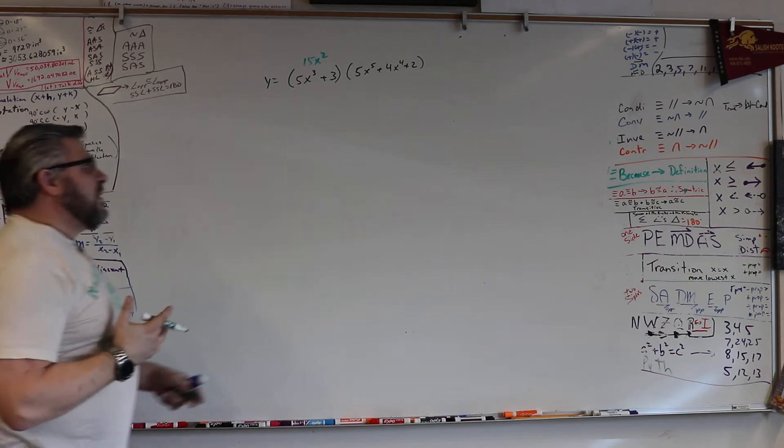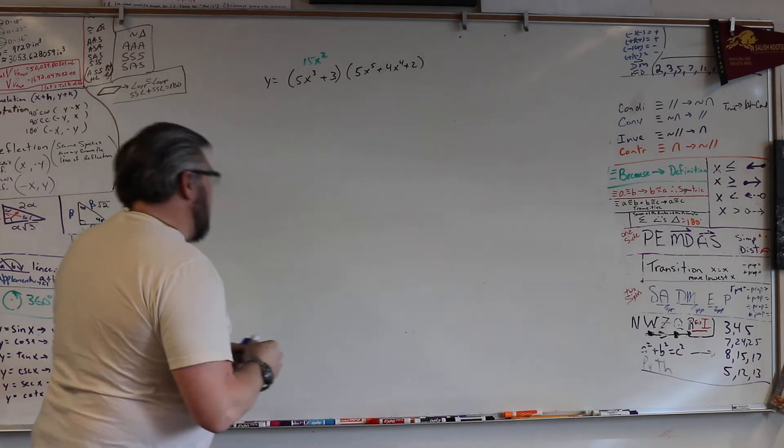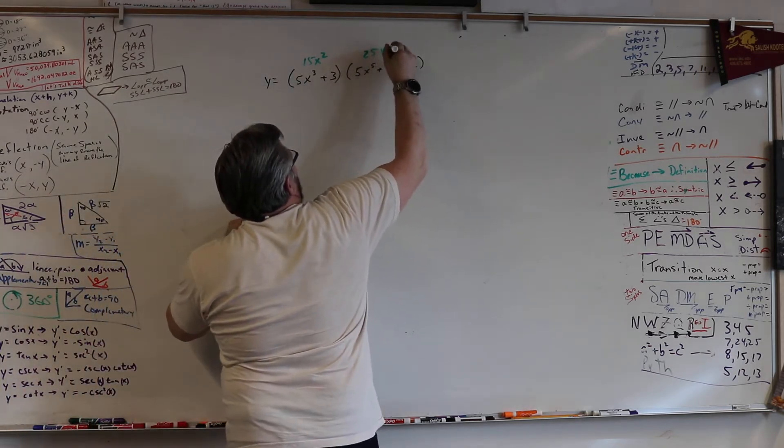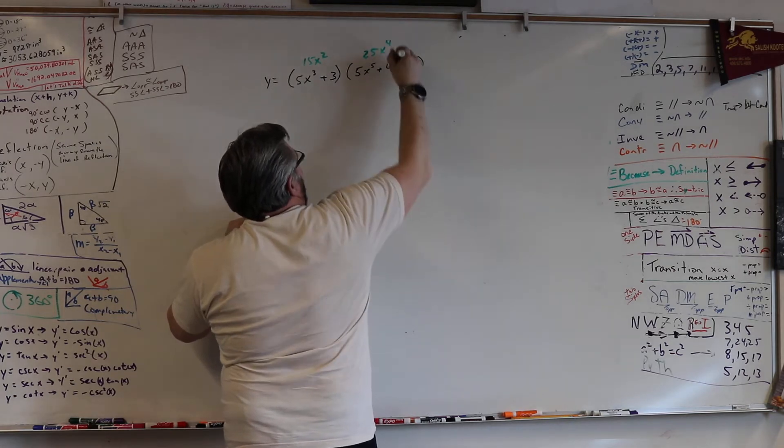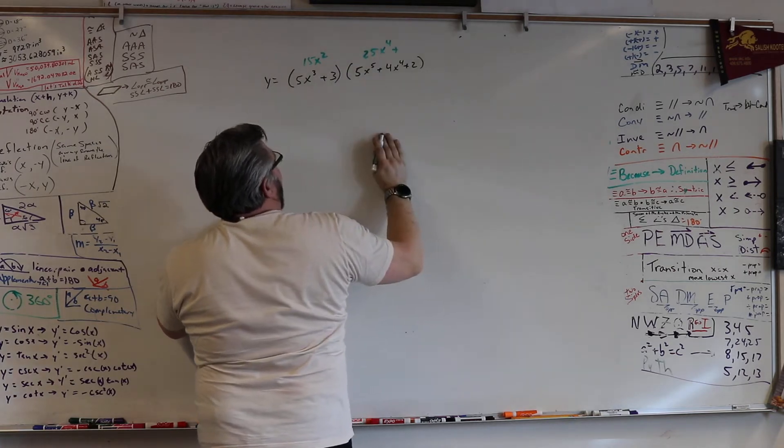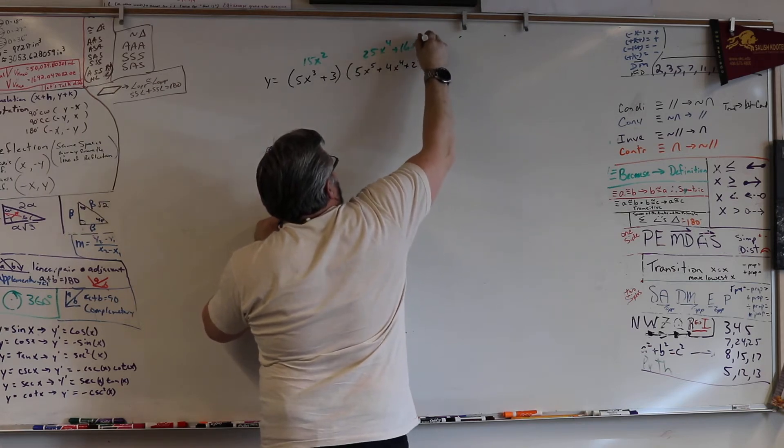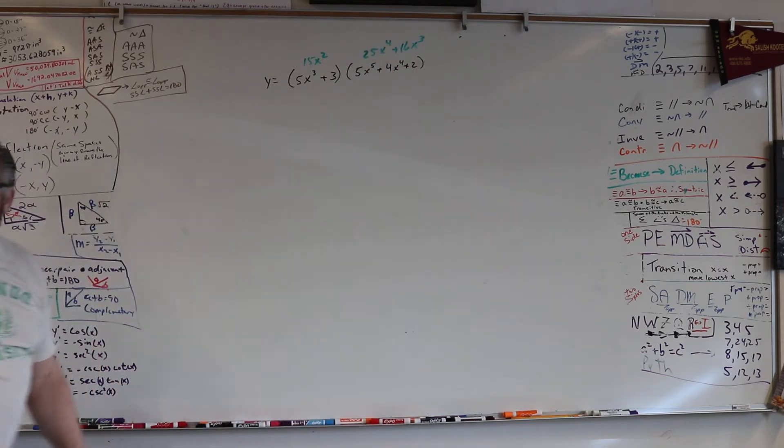What's the next one? What's the next one? It is 25x^4 plus 16x^3. That's it. That's it. Right?